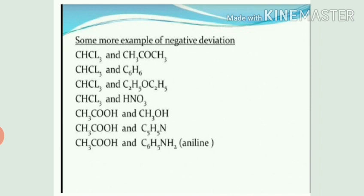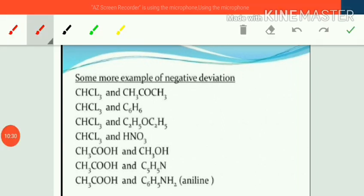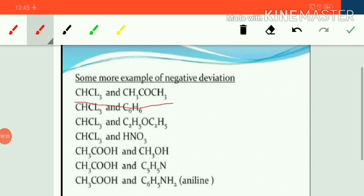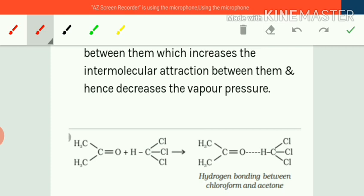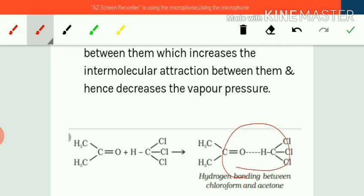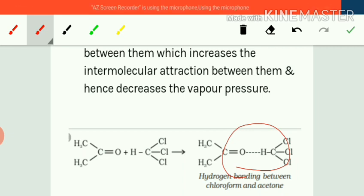Let us discuss one example. In the case of chloroform and acetone, both have weak intermolecular forces of attraction in their pure forms. When acetone and chloroform are mixed with each other, they are capable of forming hydrogen bonds. Due to this hydrogen bond formation, they have less tendency to escape from the surface of the liquid compared to when they are present alone in their pure forms.